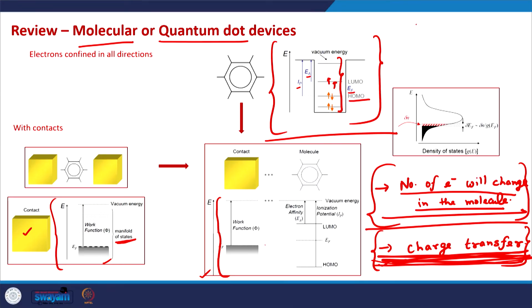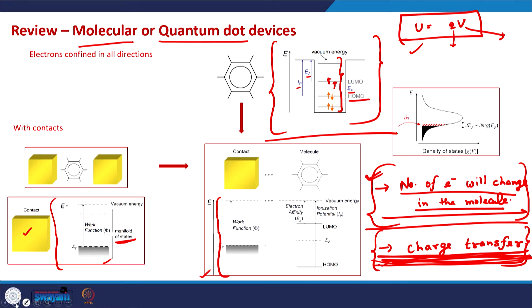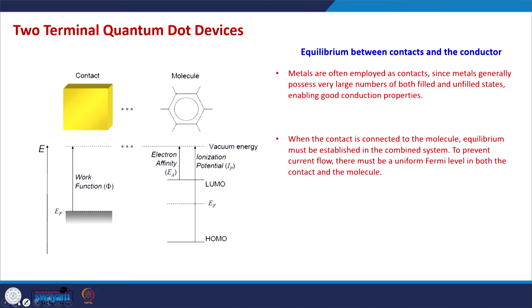There are two things to consider for equilibrium: one is that the number of electrons changes in the molecule and that will change the Fermi level. Second is the charge will change in the system and that will also change the Fermi level, because the Fermi level depends on the potential energy, given by minus q times V, where V is the electrostatic potential. Because of this, the notion of quantum capacitance comes into picture — that is where we essentially finished last time.